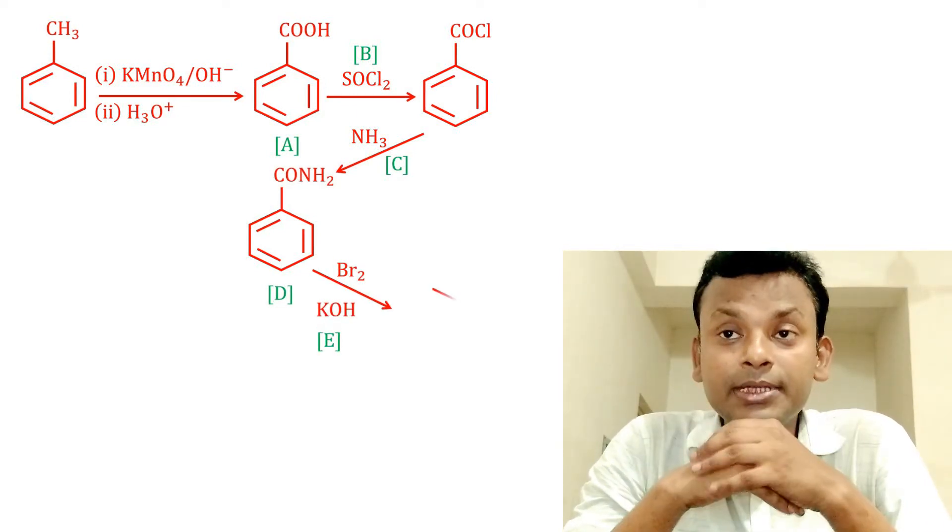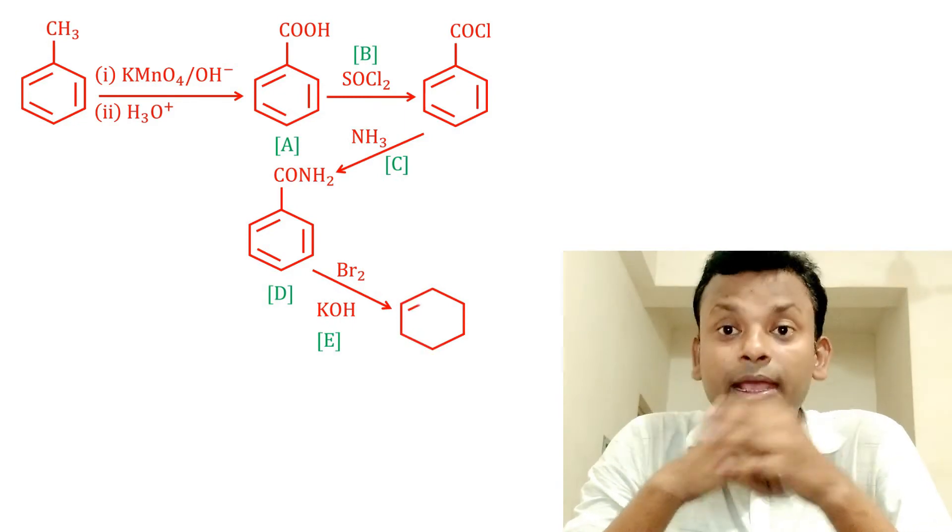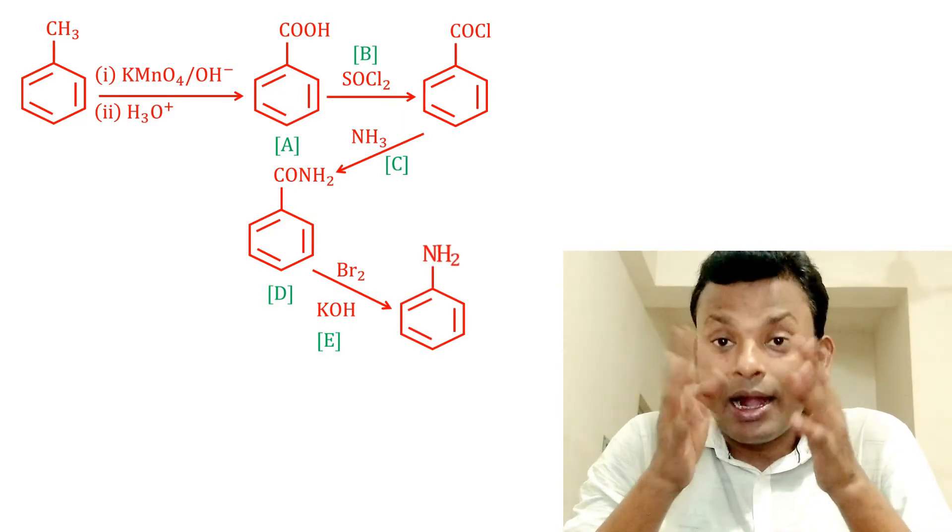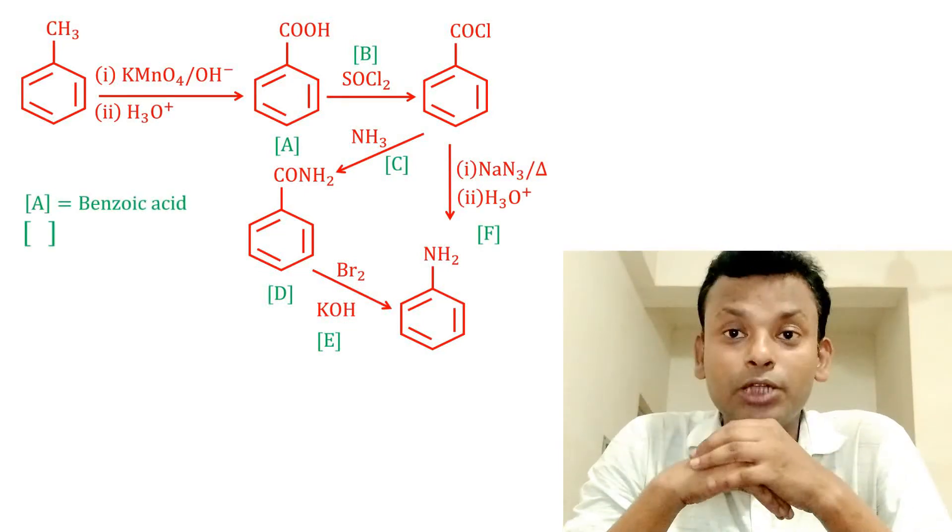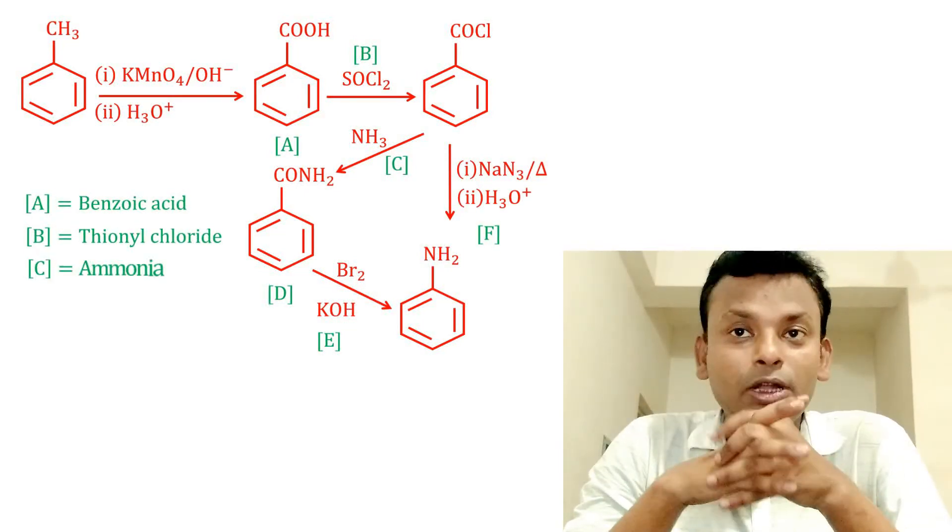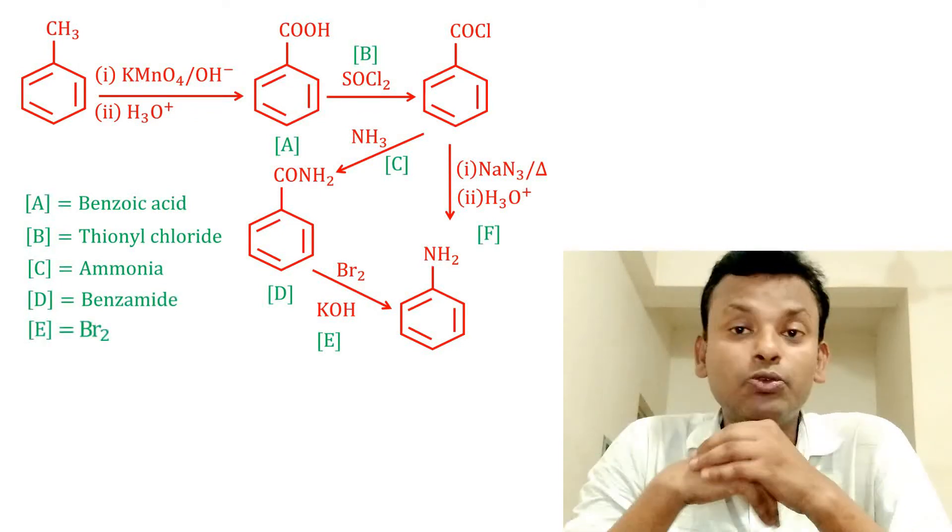And F, that is Curtius reaction, also gives aniline. So A equals benzoic acid, B equals thionyl chloride, C equals ammonia.